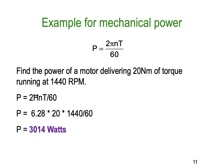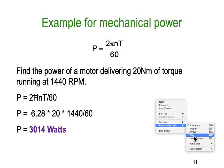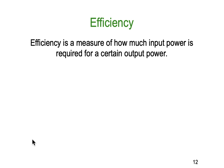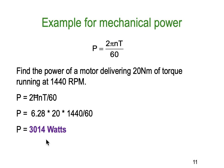Here's an example: find the power of a motor delivering 20 newton meters of torque running at 1440 RPM. The formula is 2πnT/60. We substitute in the values: 6.28 times 20 newton meters multiplied by the speed in RPM, 1440, divided by 60, and it comes out at a power of 3014 watts. Quite easy to calculate mechanical power as long as you know the torque and the RPM of the motor.